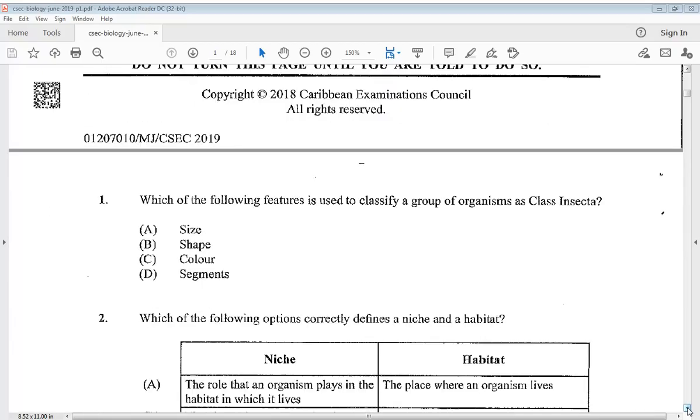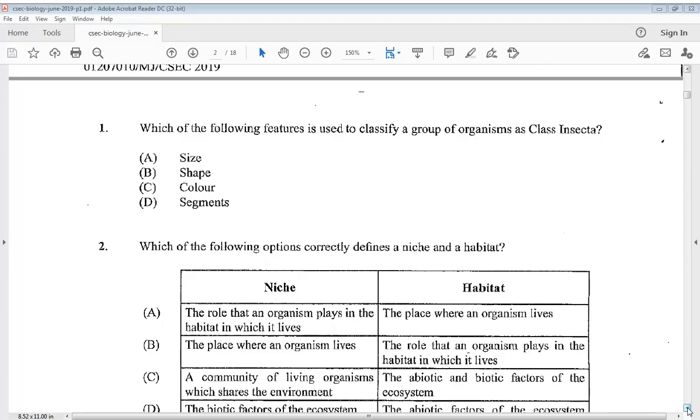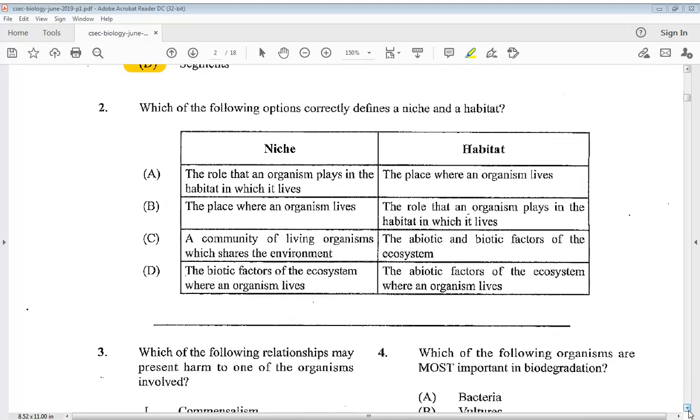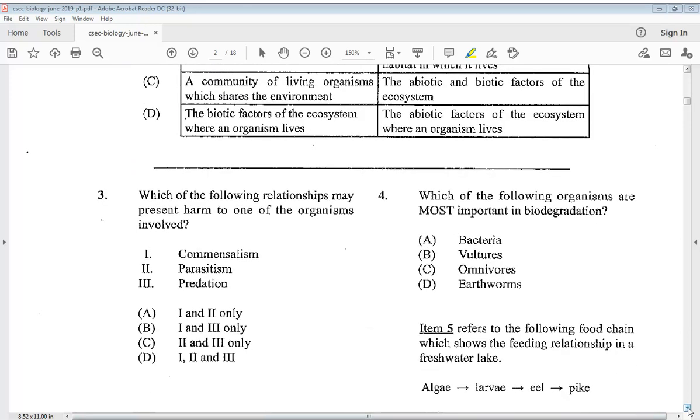The first question says which of the following features is used to classify a group of organisms as class Insecta? This is a popular question. The answer is D, segments. Question two: which of the following options correctly defines a niche and a habitat? A niche is the role that an organism plays in the habitat in which it lives, and the habitat is where an organism lives. The answer is A. Question three asks which relationships may present harm to one of the organisms involved: commensalism, parasitism, predation. The answer would be two and three, so C.